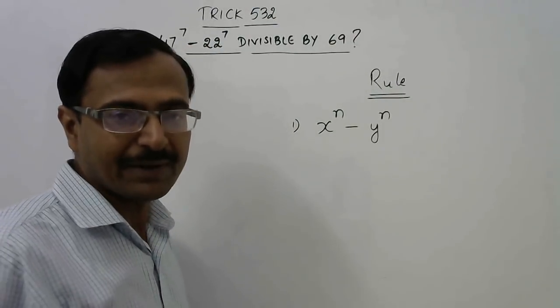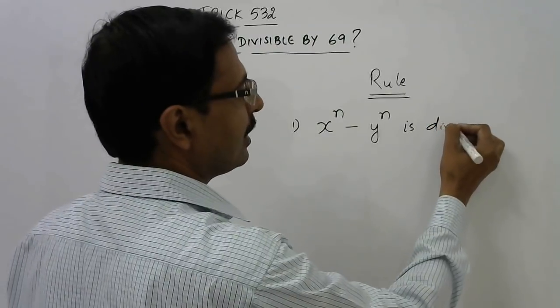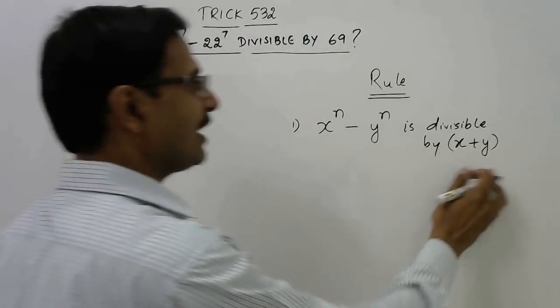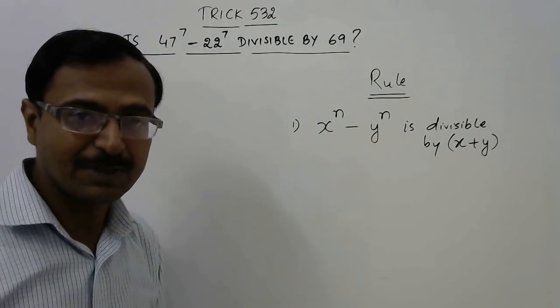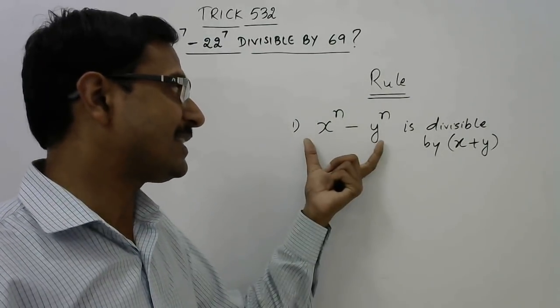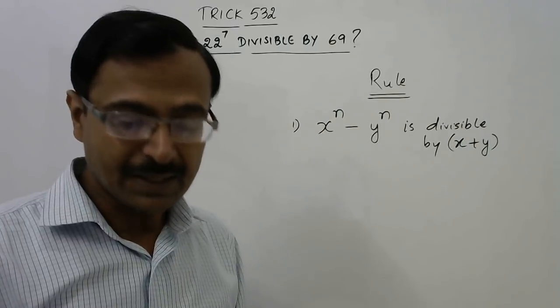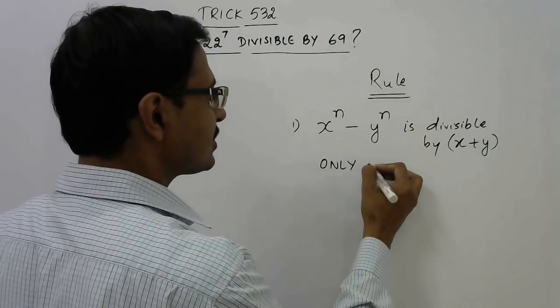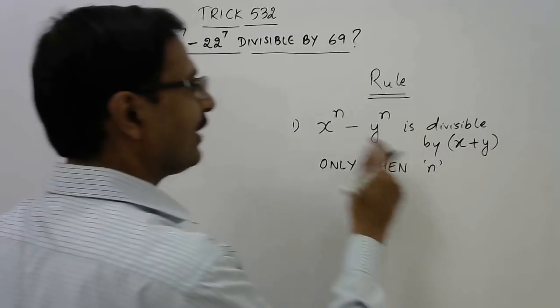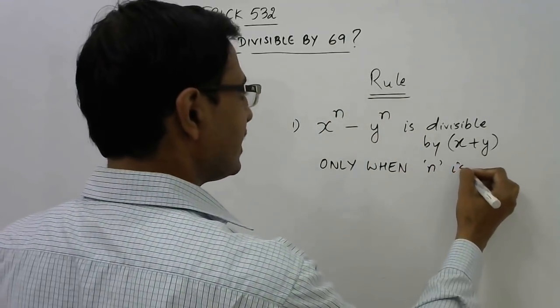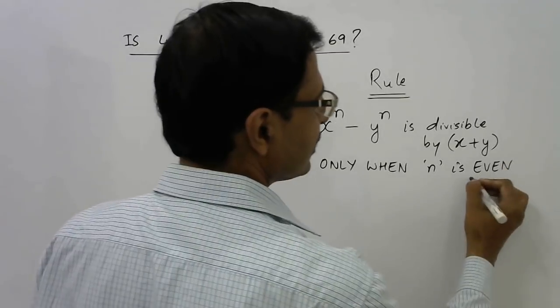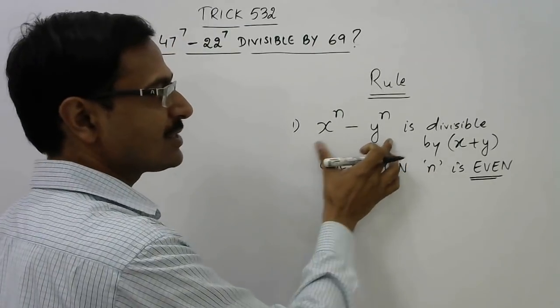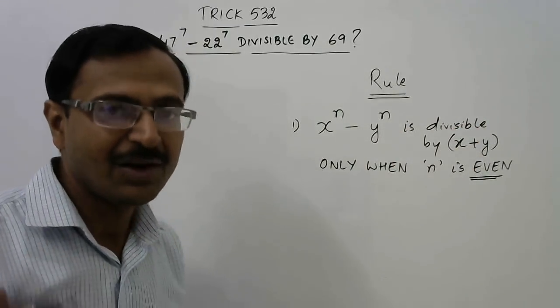So the rule goes like this: x power n minus y power n is divisible by x plus y. I have taken the sum of the bases. This happens only when n, the value of the power, is even. So whenever the power is even, then this expression is always divisible by the sum of the bases.